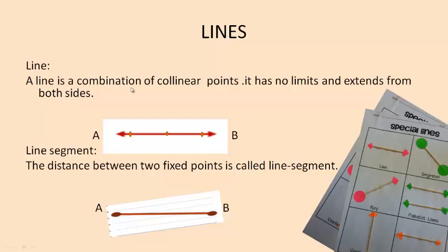Line: A line is a combination of collinear points. It has no limits and extends from both sides.